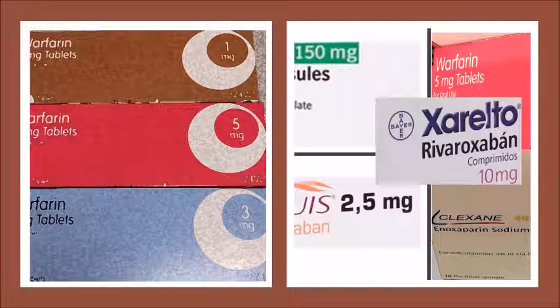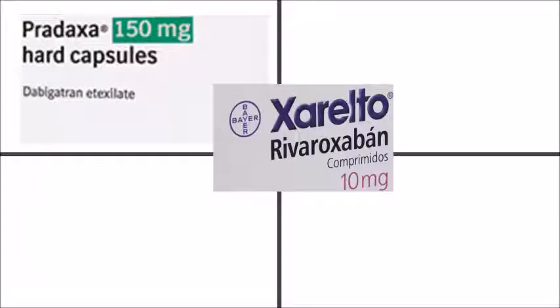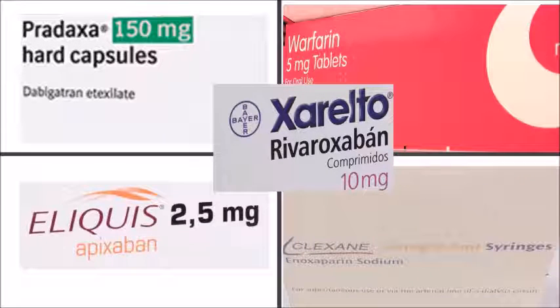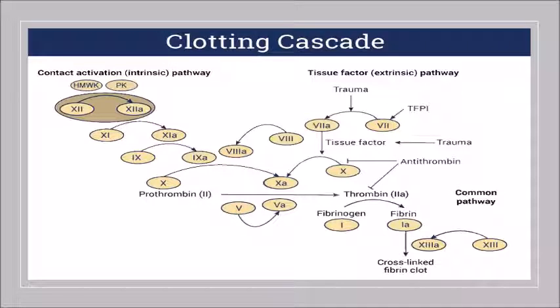Hello, we are learning about anticoagulants today like warfarin. These medicines are mainly used for the prevention of deep vein thrombosis or pulmonary embolism. Anticoagulants include rivaroxaban, dabigatran with brand name Pradaxa, warfarin, apixaban, or the low molecular weight heparin enoxaparin.